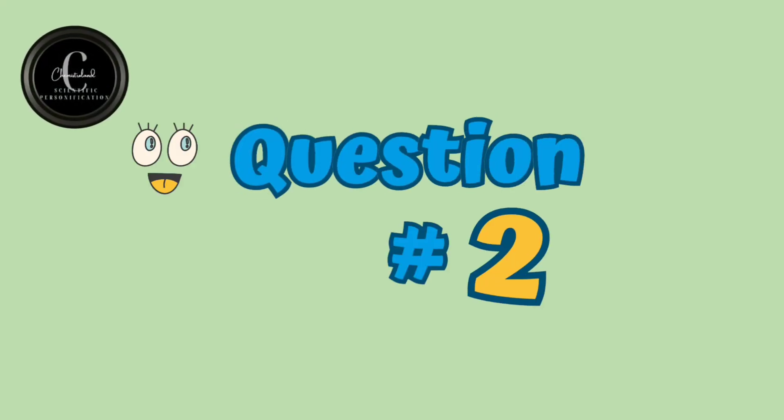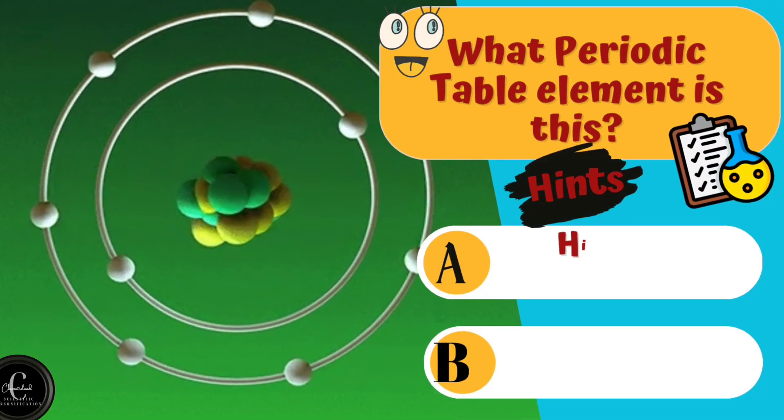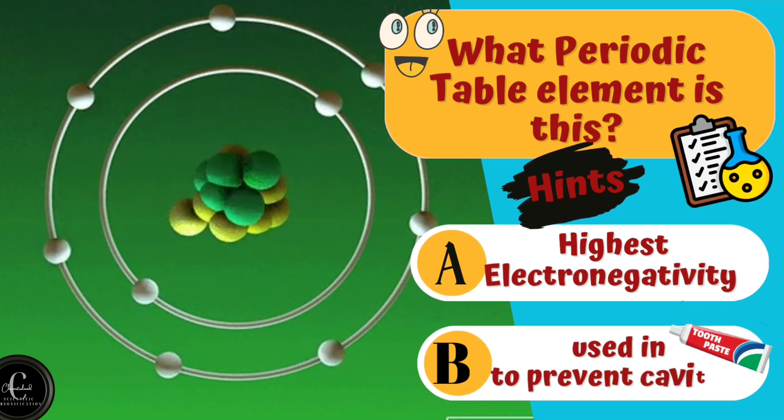Question number two is what periodic table element is this? Hints are A. Highest electronegativity. B. Used in toothpaste to prevent cavities.